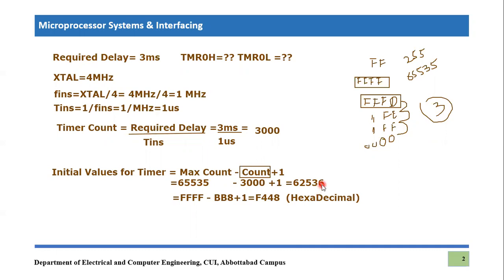We need to convert this to hexadecimal because we have to load individual byte values into Timer 0H and Timer 0L. In hexadecimal: 65,535 is 0xFFFF, and 3000 converts to 0xBB8. So: 0xFFFF minus 0xBB8 plus 0x1 equals 0xF448.